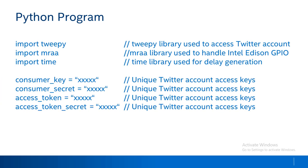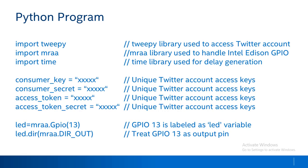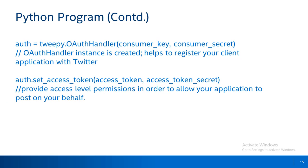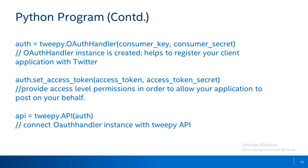Then add your keys, which you would have already noted while creating your Twitter app. Next, specify the GPIO you want to modify when the desired string is found. In this section we use Tweepy APIs and the available authentication keys to authenticate the client application for accessing the Twitter account and even posting on its behalf.